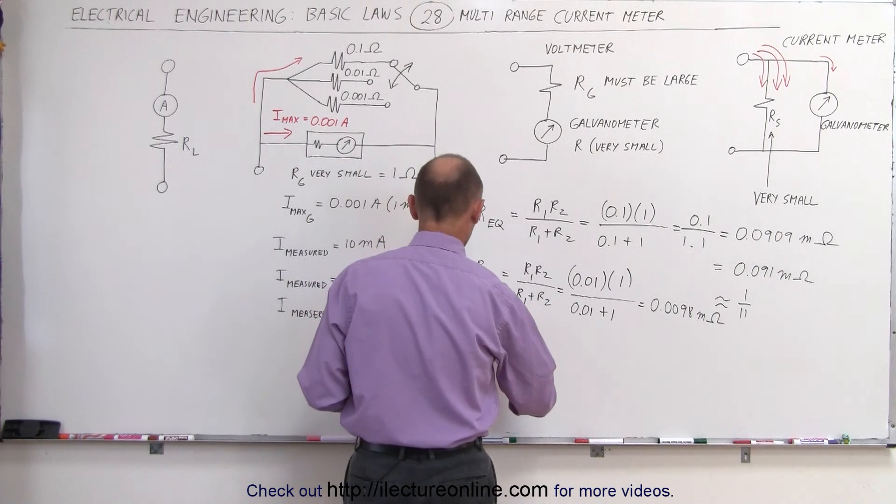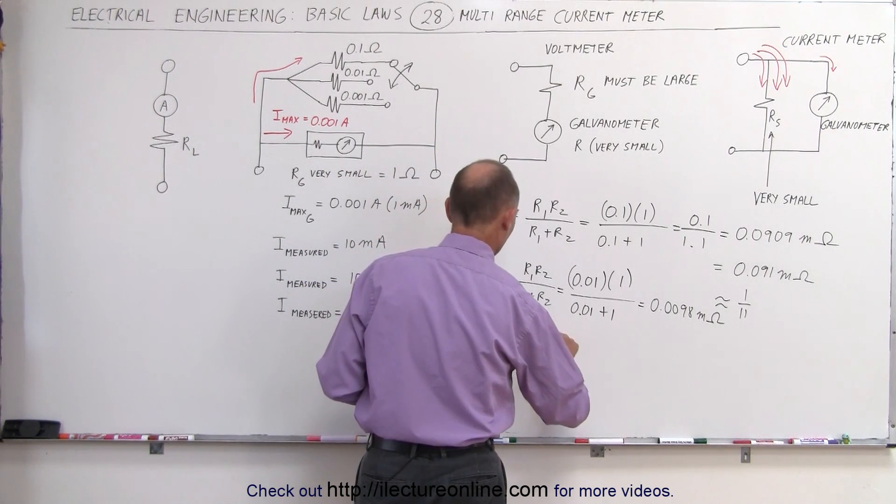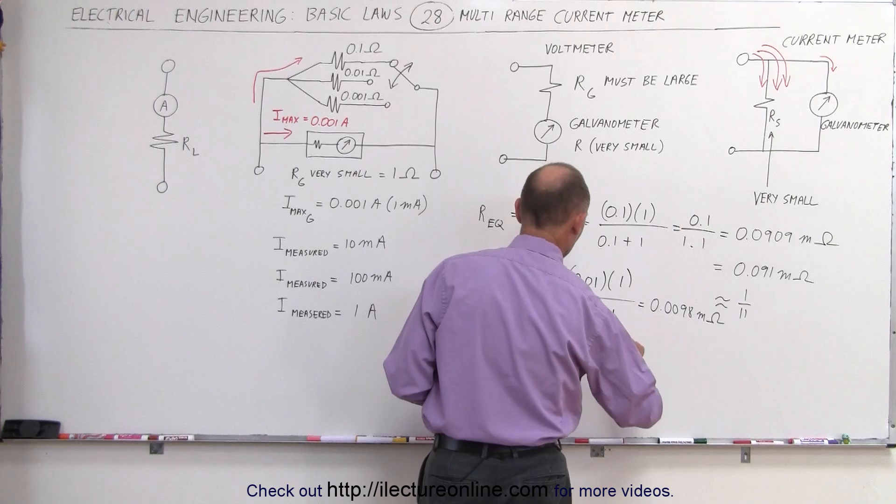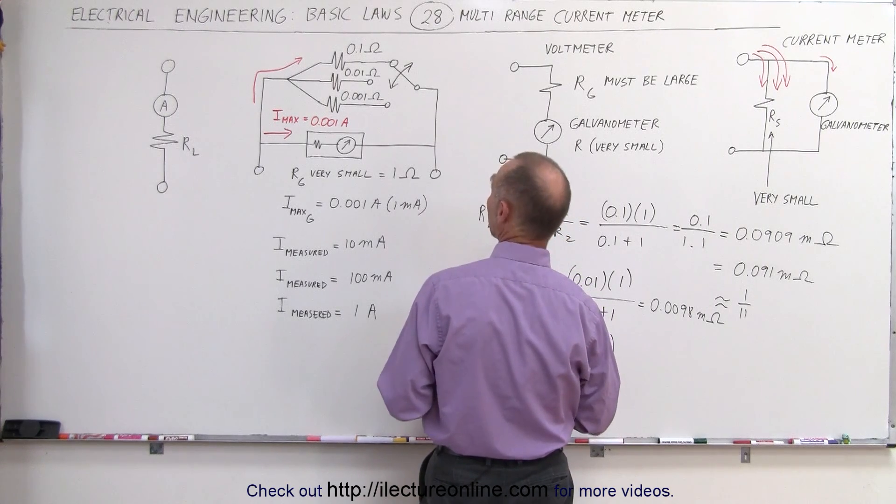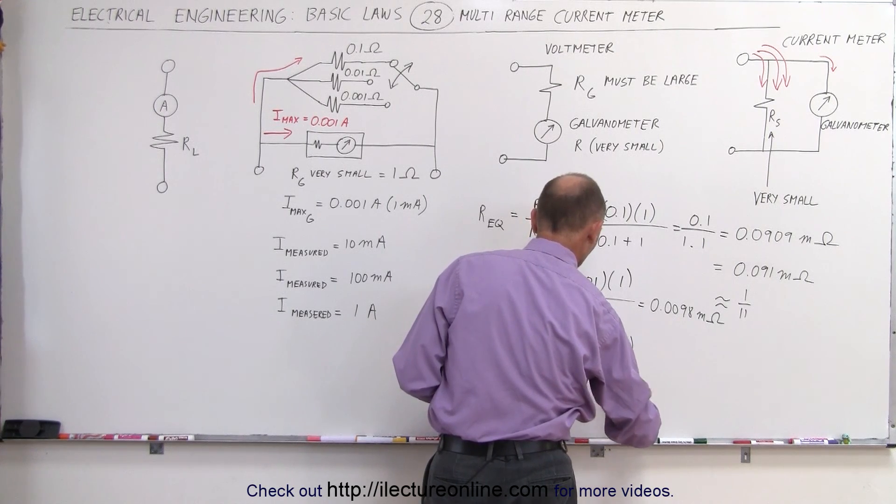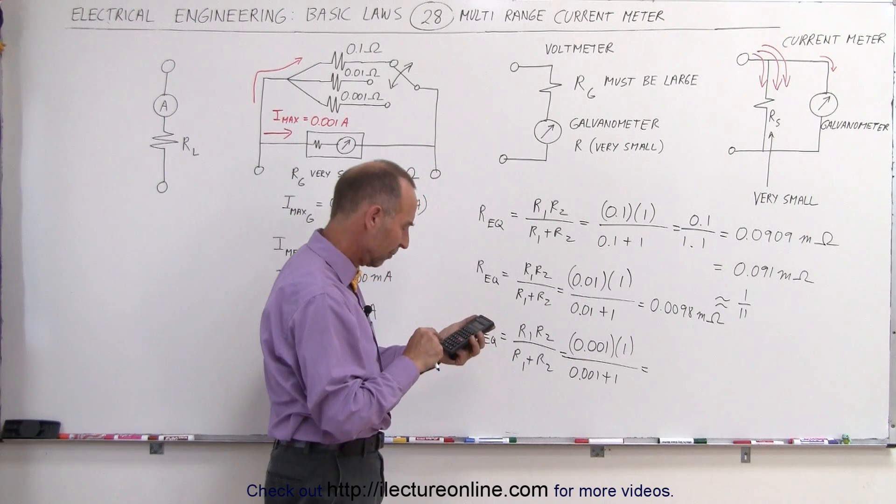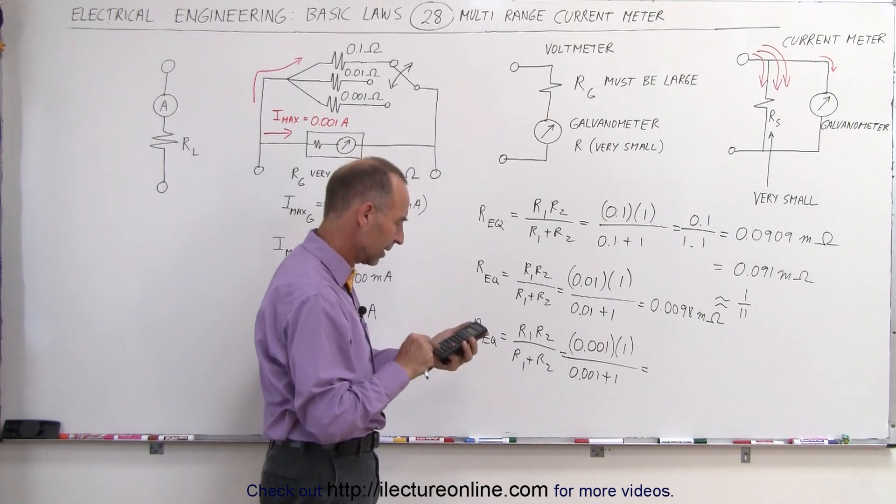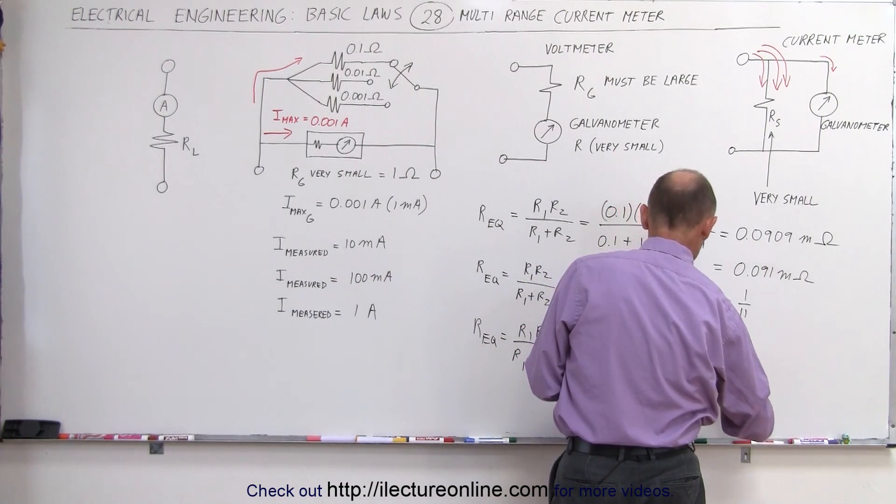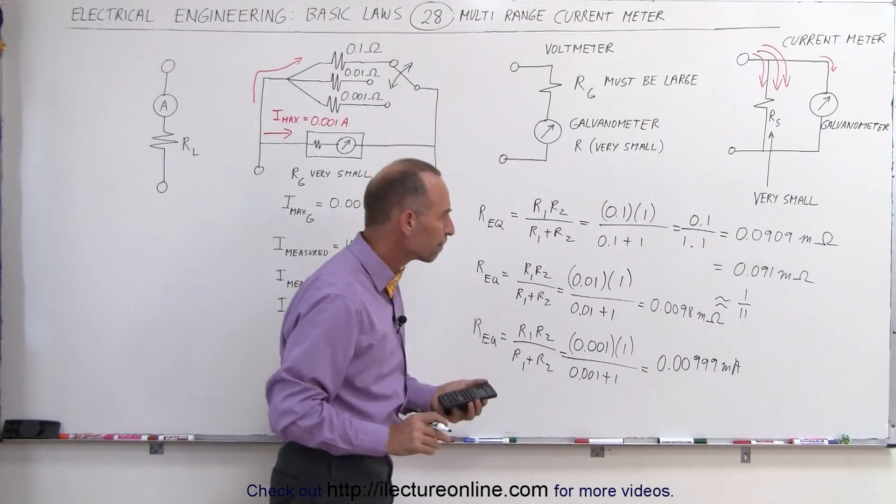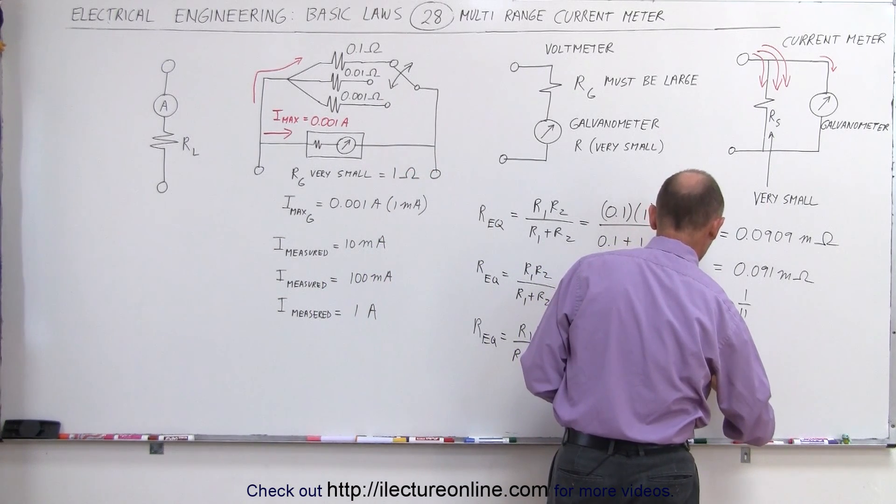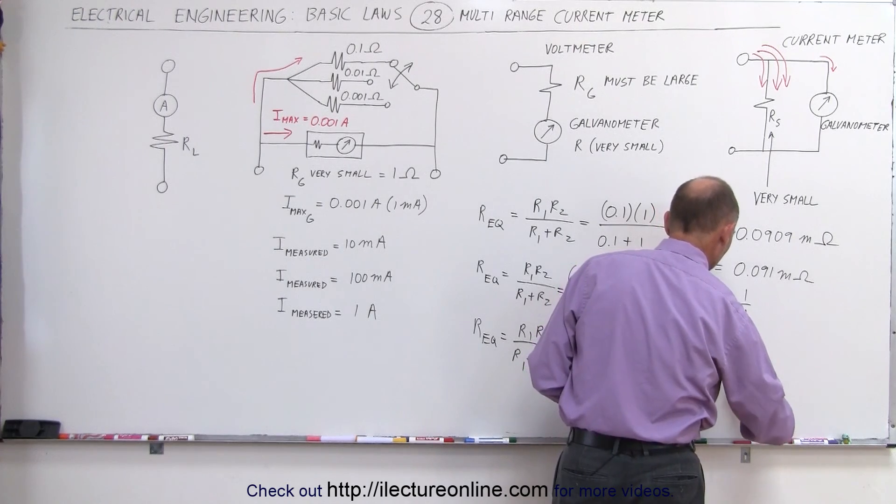And finally, if we go to the third resistor, R equivalent is equal to R1 times R2 divided by R1 plus R2, which is equal to 0.001, that is the amount of resistance in that resistor, times 1 divided by 0.001 plus 1, and that will give you an equivalent resistance of 0.001 divided by 1.001 equals, and there we have 0.00999 milli-ohms, which is very close to, whoop, I'm missing another zero, am I not? I'm missing another zero. 0.00999 milli-ohms.